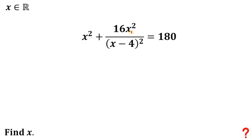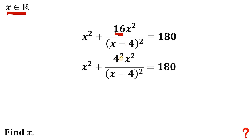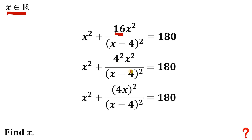So here's the equation: x squared plus 16x squared over (x minus 4) to the power of 2 equals 180. We know x is a real number, and the goal is to find all real x that satisfies this equation. First, we can rewrite 16 as 4 to the power of 2, and then combine 4 squared and x squared as (4x) to the power of 2.